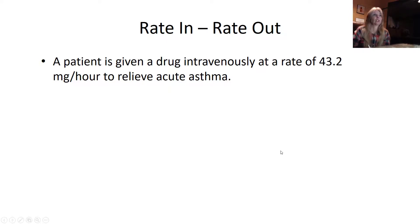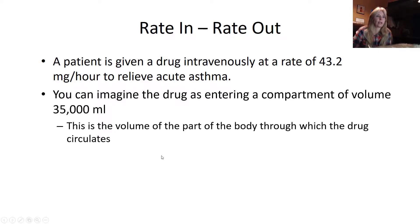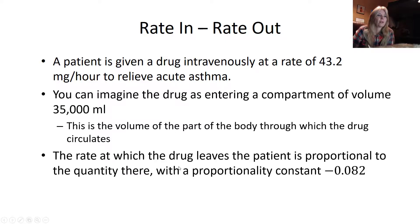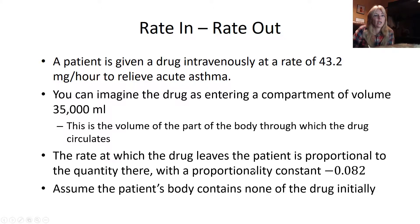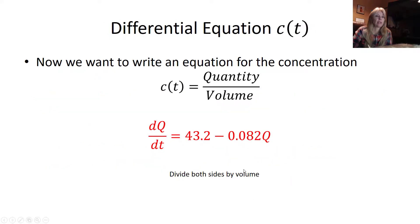All of these examples have a rate in minus a rate out. A patient is given a drug at 43.2 milligrams per hour. This one's a little weird, it's a homework question. You can imagine the drug is entering a compartment of volume 35,000 milliliters where it's circulating. The rate at which the drug leaves the patient is proportional to the quantity there with this constant of proportionality. Assume the patient's body contains none of the drug initially.